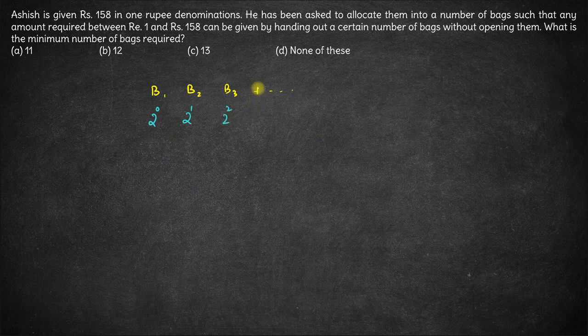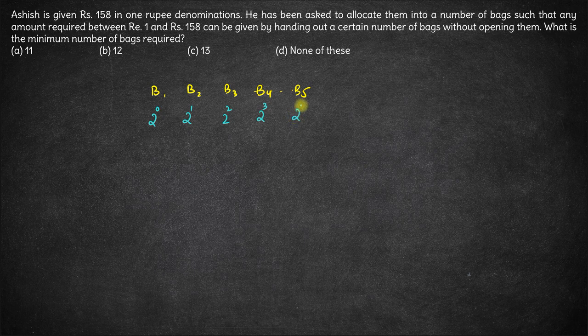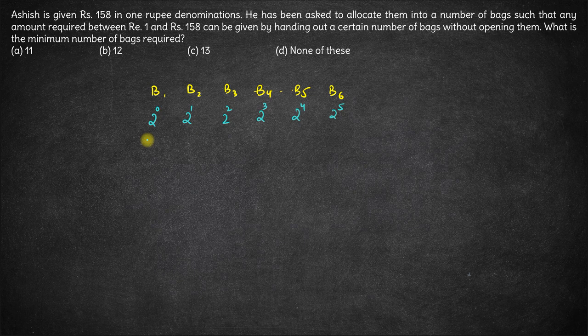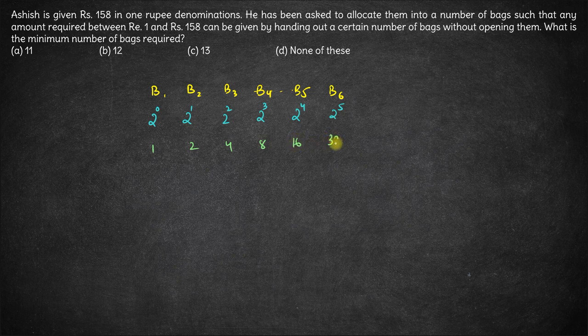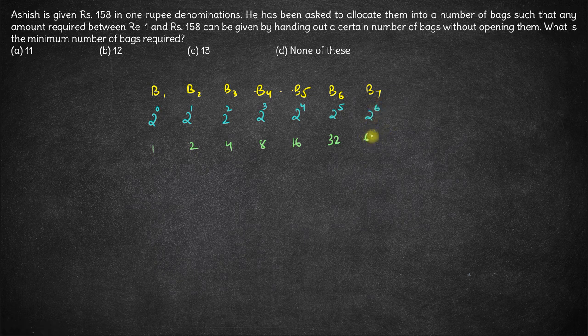So B4 must contain 2 cube coins, B5 must contain 2 to the power 4 coins, B6 must contain 2 to the power 5 coins. What is the value so far? This is 1, 2, 4, 8, 16, 32. If you add these, the total will come out to be 63 coins. Then we will have another bag B7 which will contain 2 raised to the power 6, which is 64 coins. So 63 plus 64 is 127.